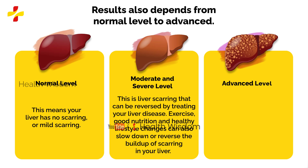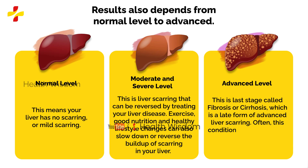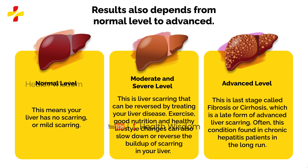Advanced level: this is the last stage called fibrosis or cirrhosis, which is a late form of advanced liver scarring. Often, this condition is found in chronic hepatitis patients in the long run.